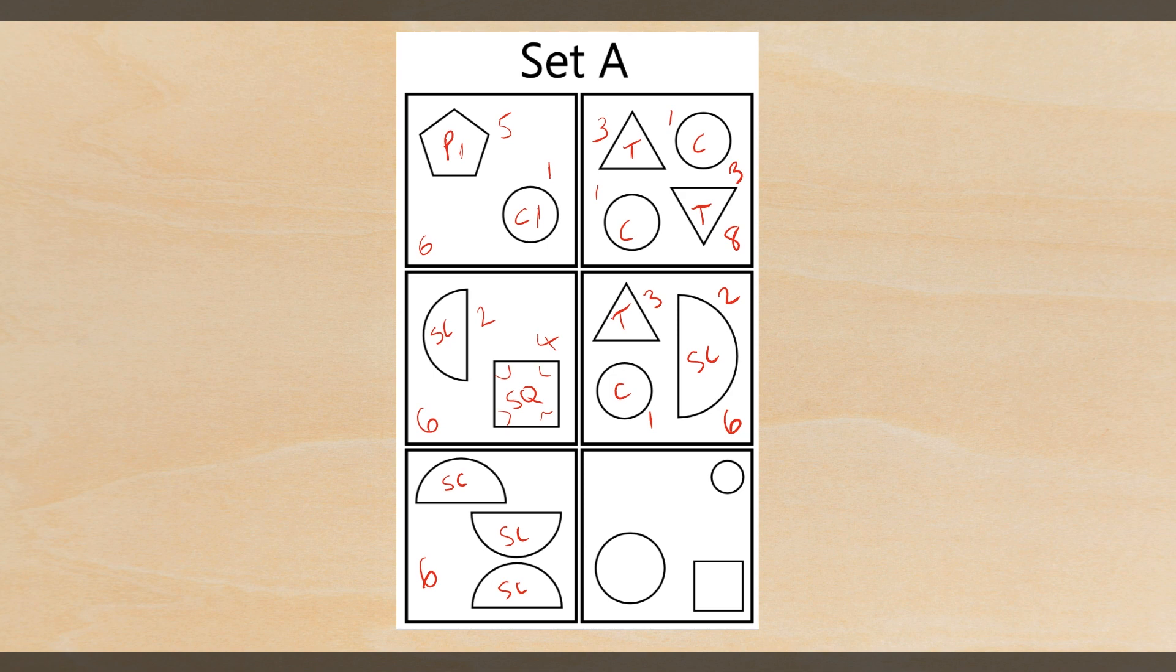And then moving to the final box of set A, we have a circle, that would write properly a square, and another circle, which gives us, once again, six sides in total for the box. So this should be leaping out at you, we now have six boxes, five of which have a total number of six sides, one of which is eight.